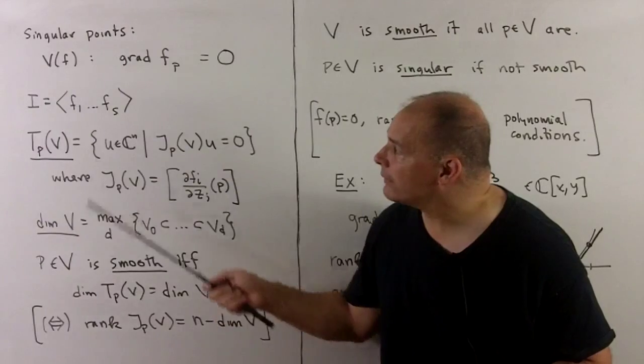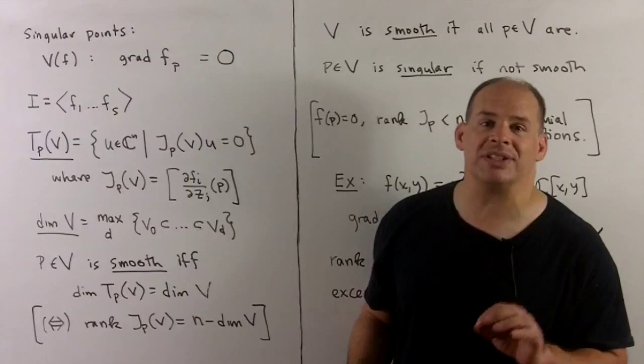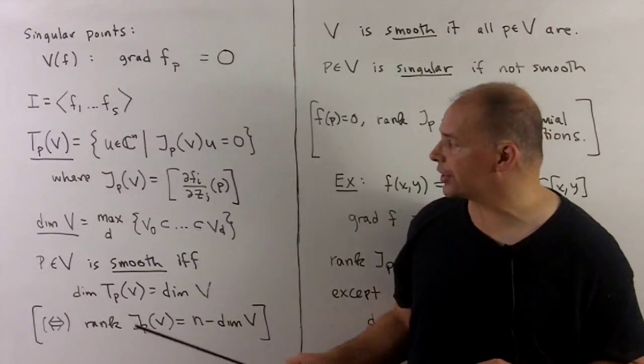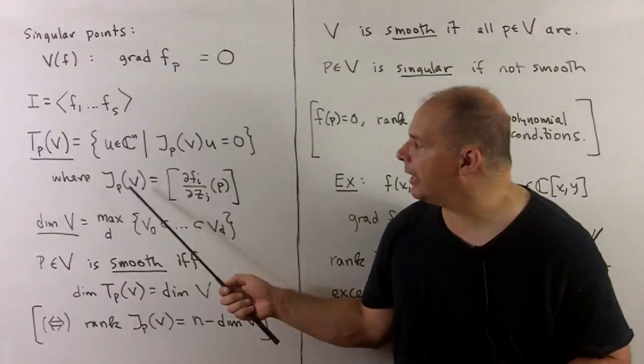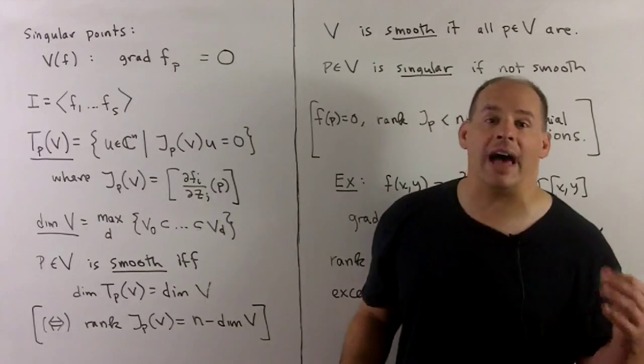Otherwise, for varieties defined by polynomials F₁ through Fs, we refer questions of smoothness and singularity to the Jacobian matrix. The Jacobian at P—I'll take the gradients, stack them on top of one another, and then evaluate at P.